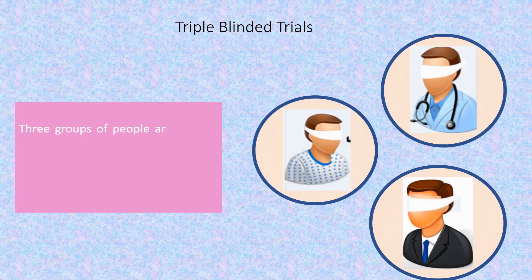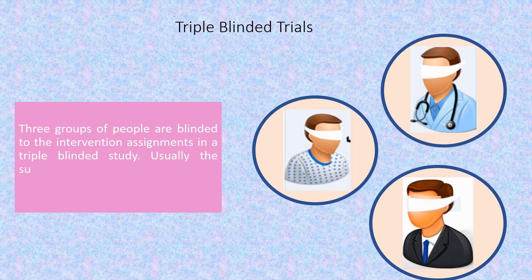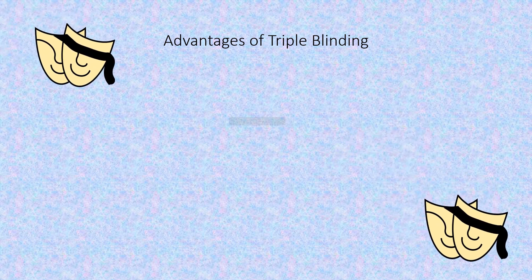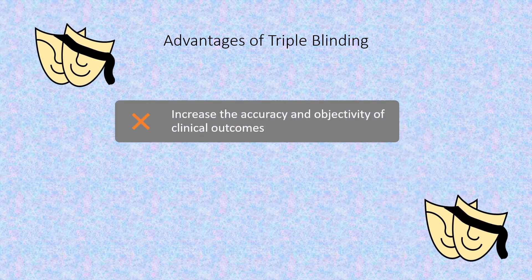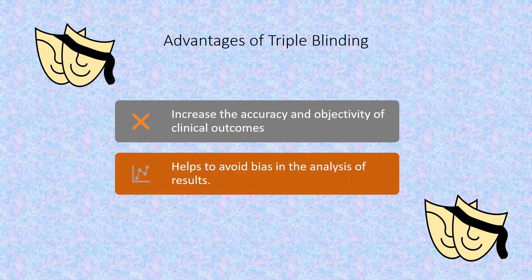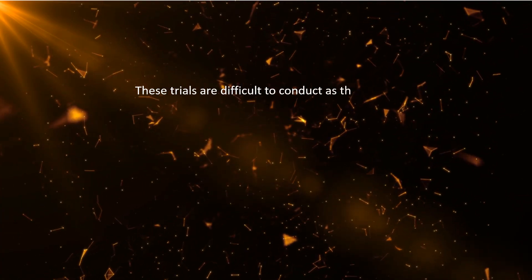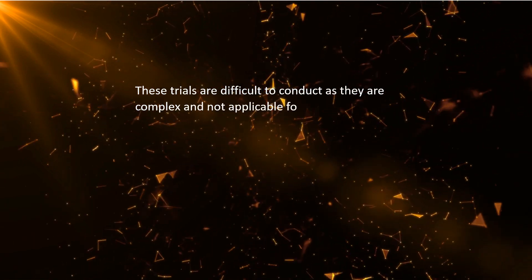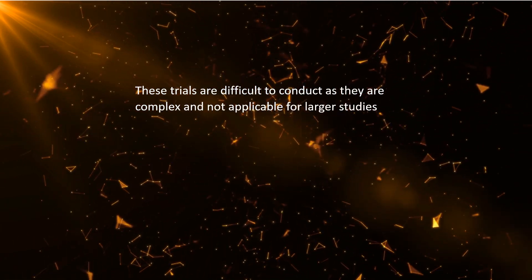In a triple-blinded study, three groups of people are blinded to intervention assignments — usually the subjects, the investigators, and the outcome assessors. Triple-blinding increases the accuracy and objectivity of clinical outcomes and helps to avoid bias in the analysis of results. However, these trials are difficult to conduct as they are complex and not applicable for larger studies.